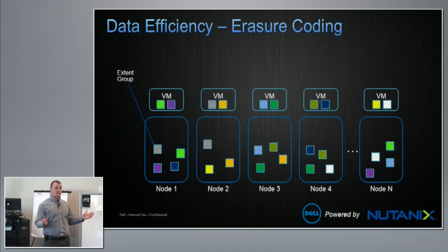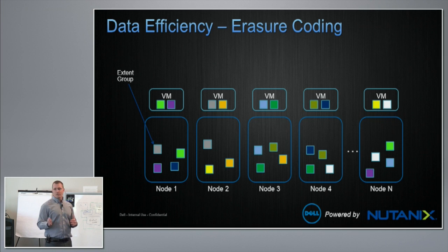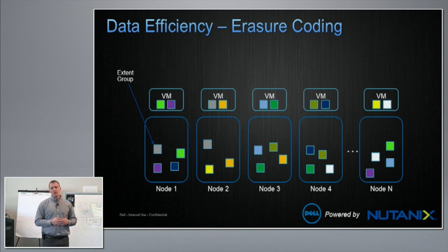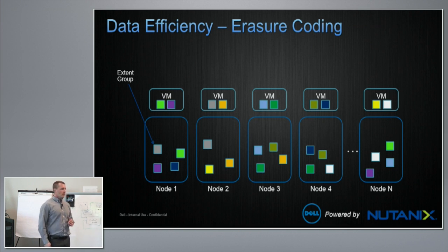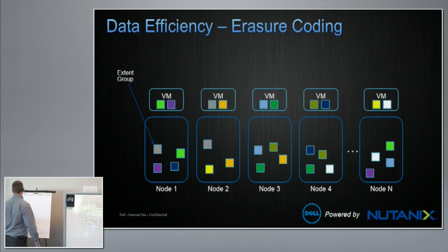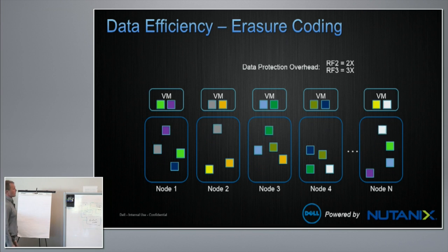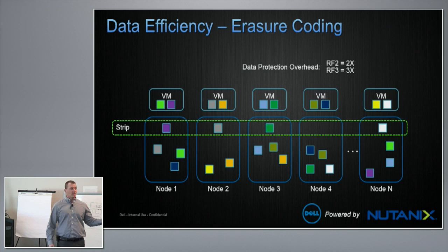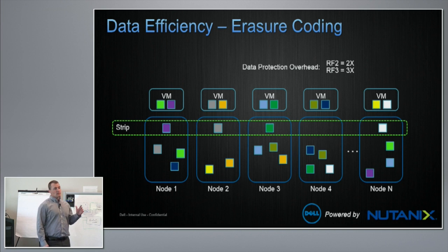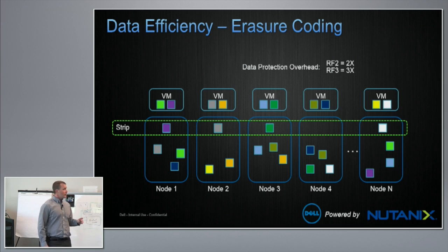We form a strip from the extent groups. The strip can be variable length — a 4+1 strip is kind of the maximum we've found for data efficiency, as a larger strip doesn't gain a great percentage on data reduction. We use replication factor, not RAID, so about 50% of usable storage can be consumed. With erasure coding, we take an extent group from each node to form a stripe, perform an XOR on that data to create the parity, and then remove the redundant copies throughout the cluster.